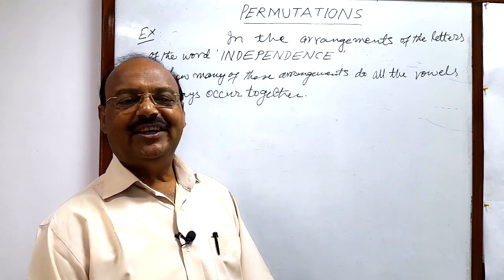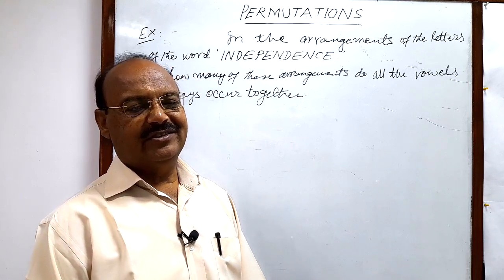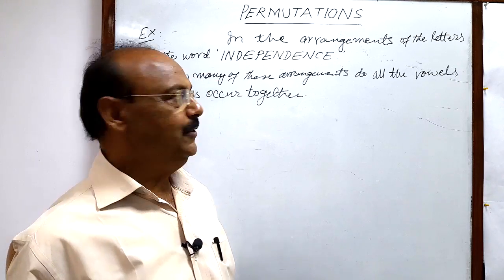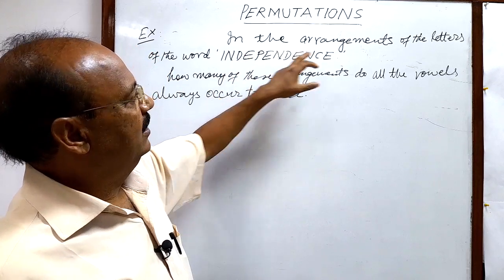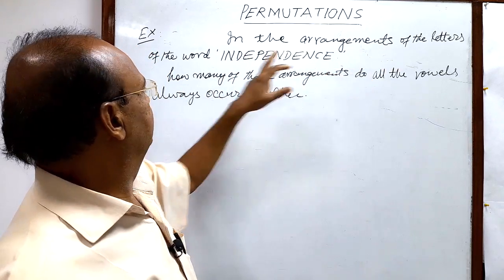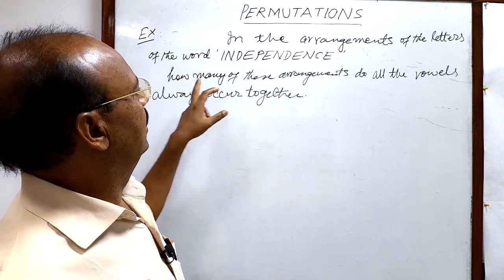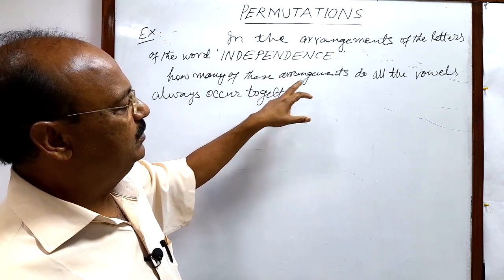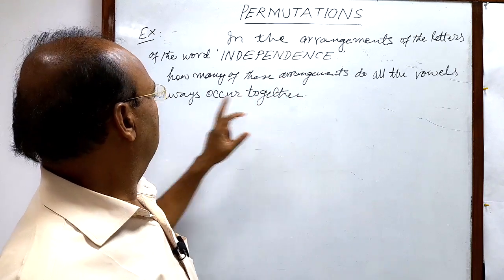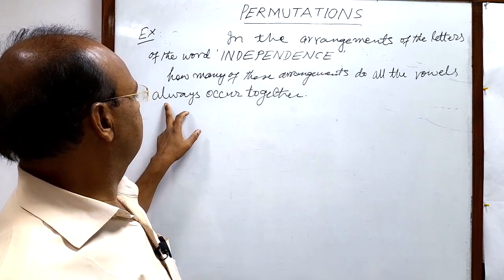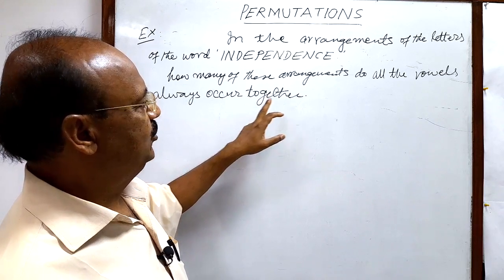Welcome students, let us see a question from the topic permutation. This is a very interesting question. The question is: in the arrangements of the letters of the word INDEPENDENCE, how many of these arrangements do all the vowels always occur together?